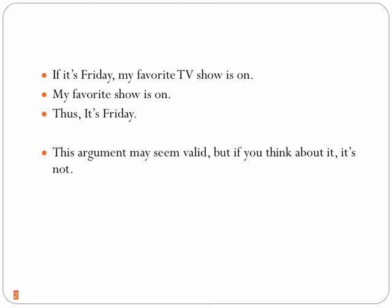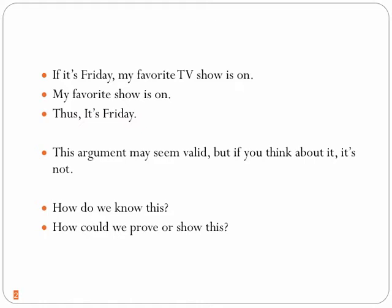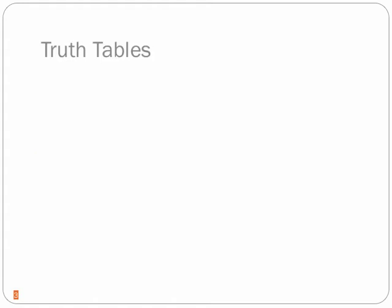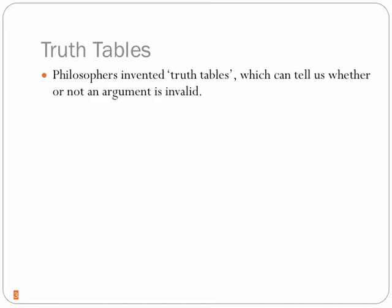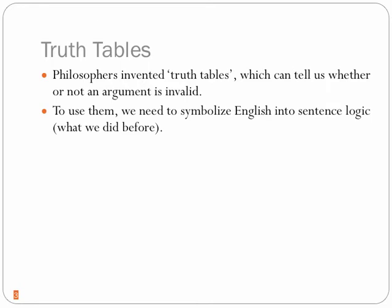So it would be nice to have a test or checking procedure that: A, gives us an answer when we don't have one — sometimes you look at an argument and you just don't know if the conclusion follows; and B, gives us a way to check our answers when we think it's one way and maybe it turns out it's not. Philosophers devised a formal method to show arguments are valid or invalid, and they're called truth tables. To use these, we're going to have to symbolize English into sentence logic — that's why we spent the last lecture learning how to do that. The truth tables only work in the language of sentence logic, not in English.